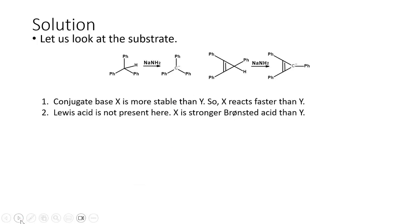When sodamide abstracts a proton, we end up with a conjugate base in both cases. For X, when the hydrogen atom is abstracted, a carbanion is formed with three phenyl rings attached. There are plenty of resonance structures possible because the negative charge can be distributed among all three phenyl rings. This is a highly stable species. When a conjugate base formed is highly stable, that reaction proceeds much faster.